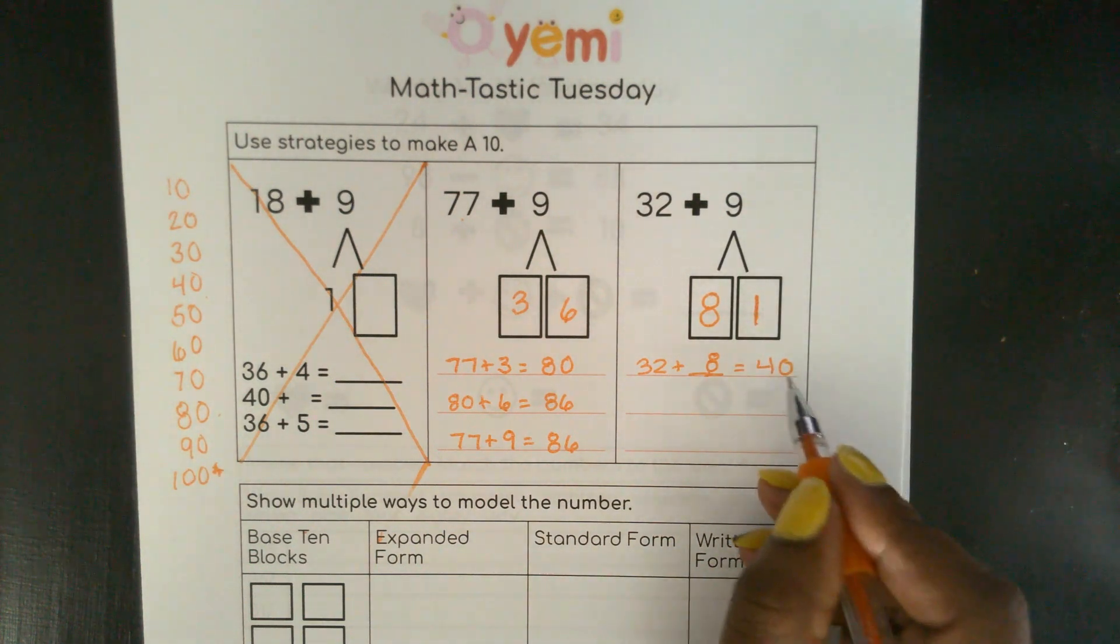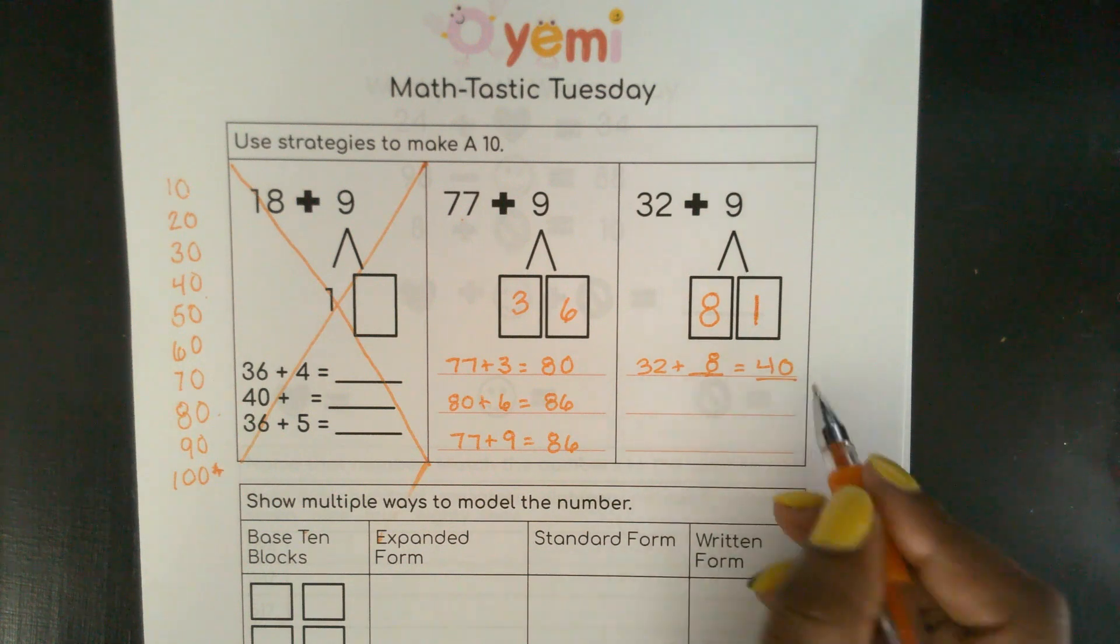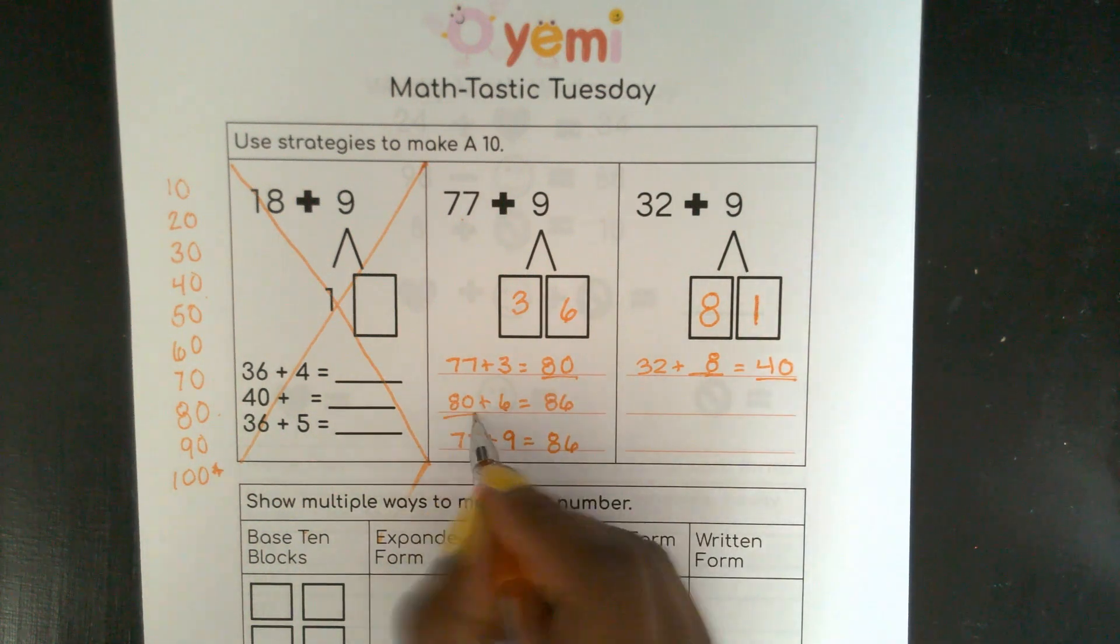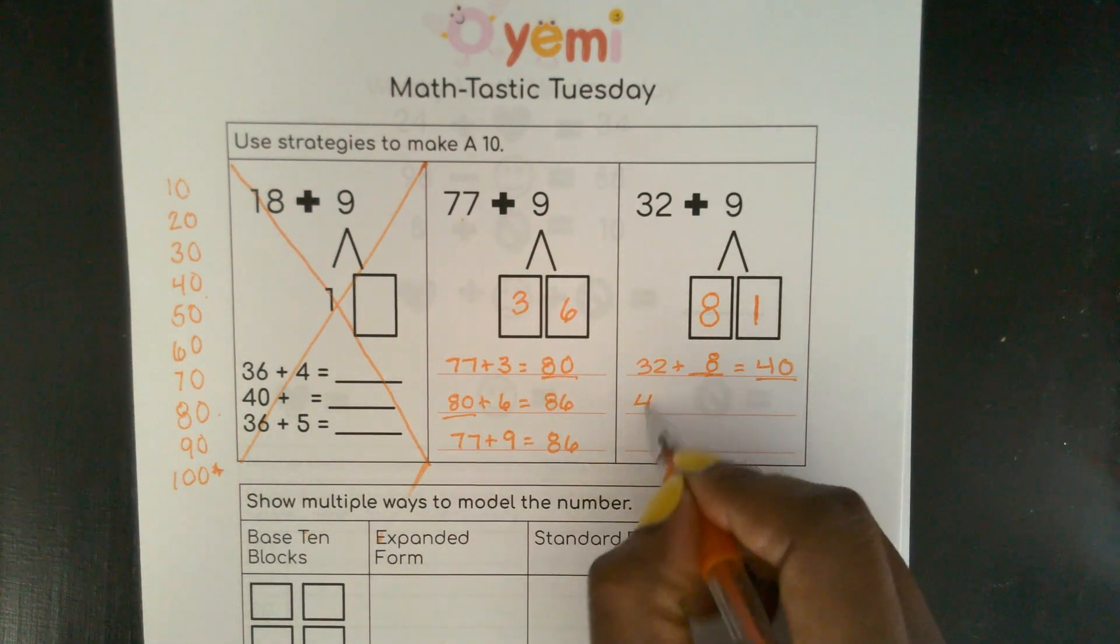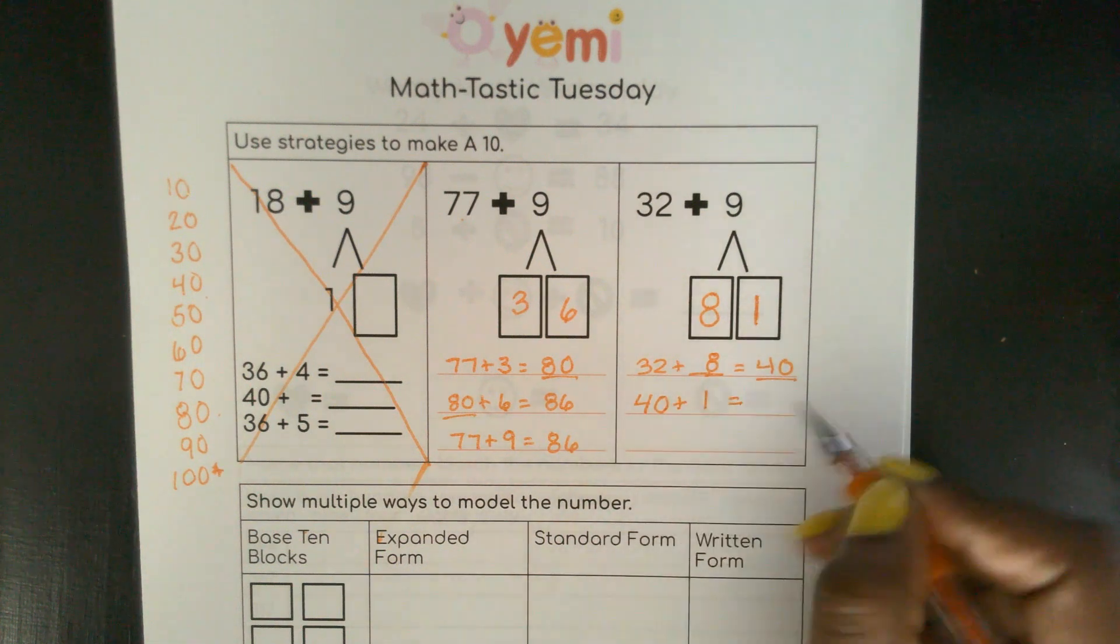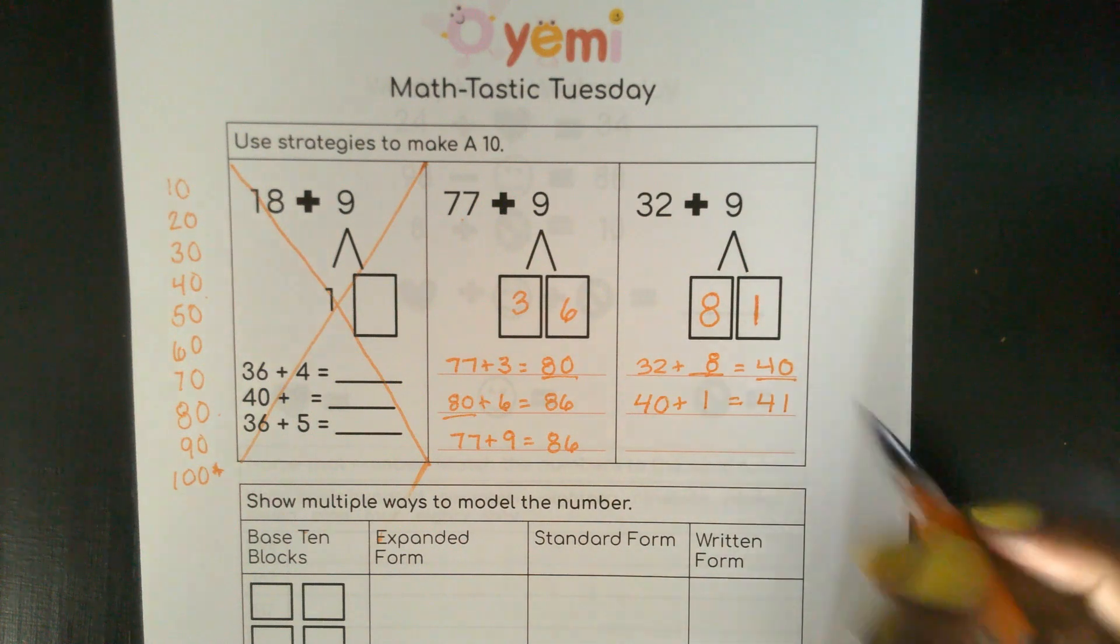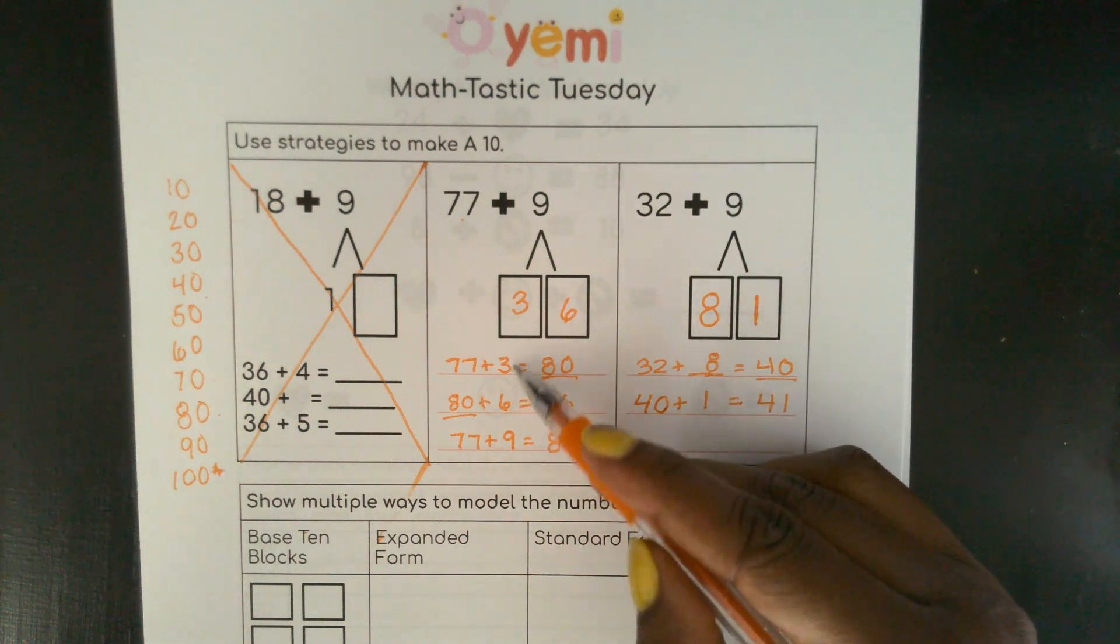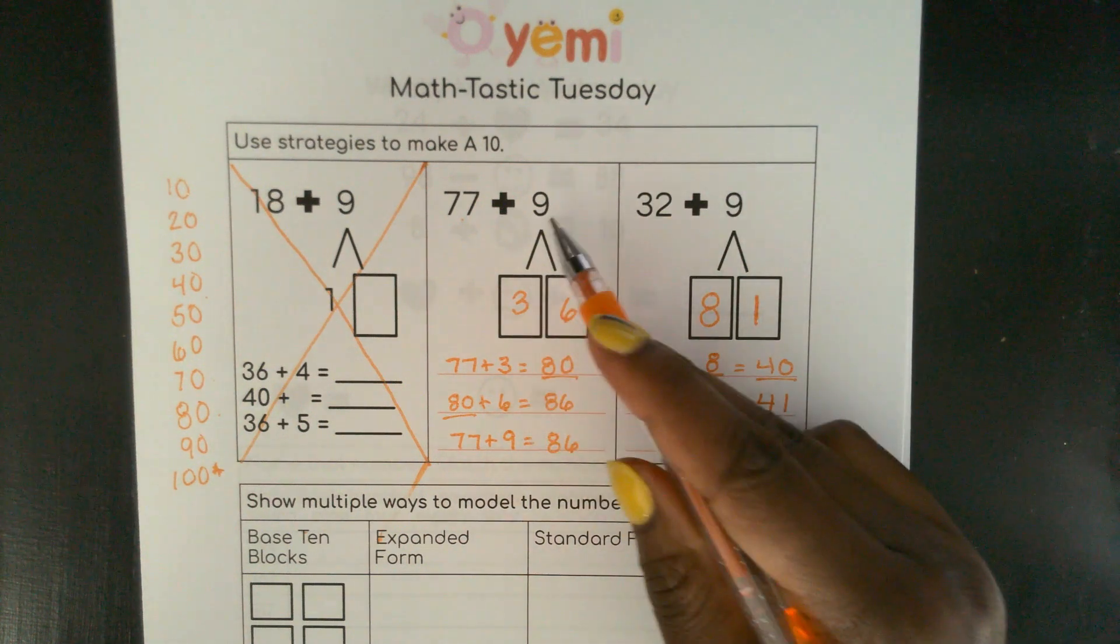So let's take this number, 40, just like we took 80, and let's start with 40. 40 plus 1 equals 41.